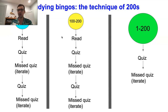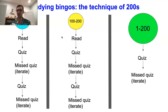It's worth mentioning that when I say bingos, I'm talking about seven and eight letter words. You can theoretically bingo with a longer word like a nine or even a ten if you play through multiple tiles on the board, but it's very rare. I don't recommend studying nine letter words until you've studied all of the seven and eight letter words, and I've personally never even studied any ten letter words. So to be very clear, when I say bingos, I mean seven and eight letter words.